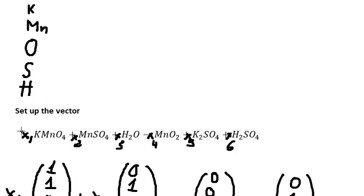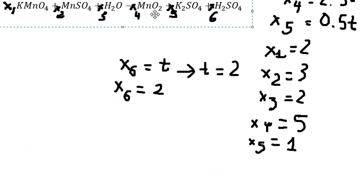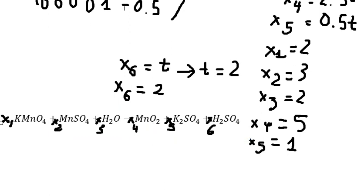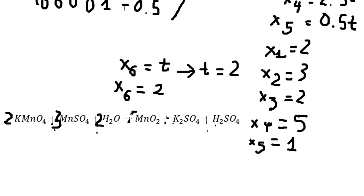In this case I will select t equals 2, so S6 equals 2. After substituting, we get S1 = 2, S2 = 3, S3 = 2, S4 = 5, S5 = 1, and S6 = 2. So putting these coefficients back into the equation gives us the final answer. That is the technique — thank you for watching.